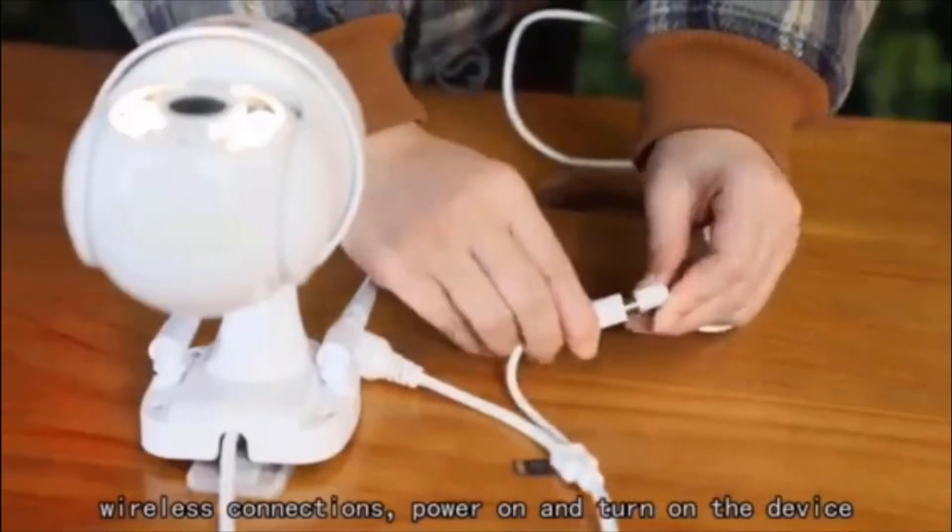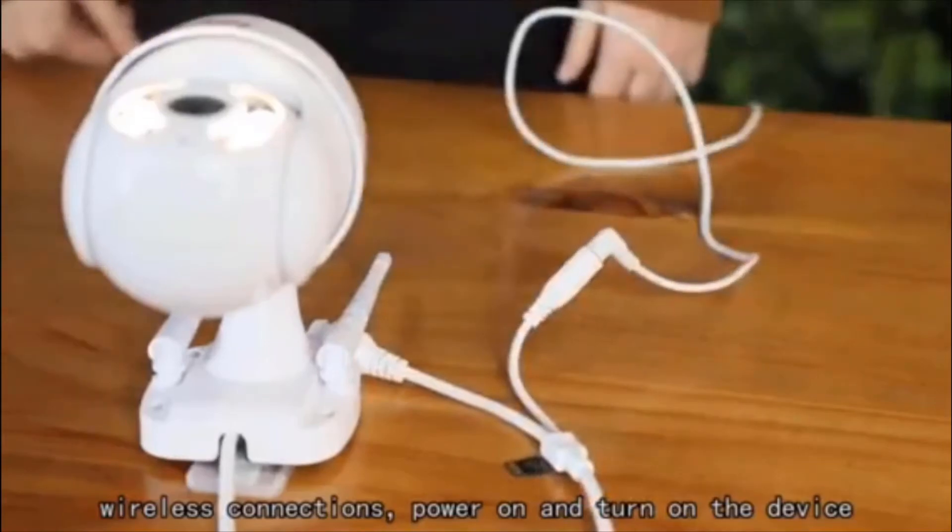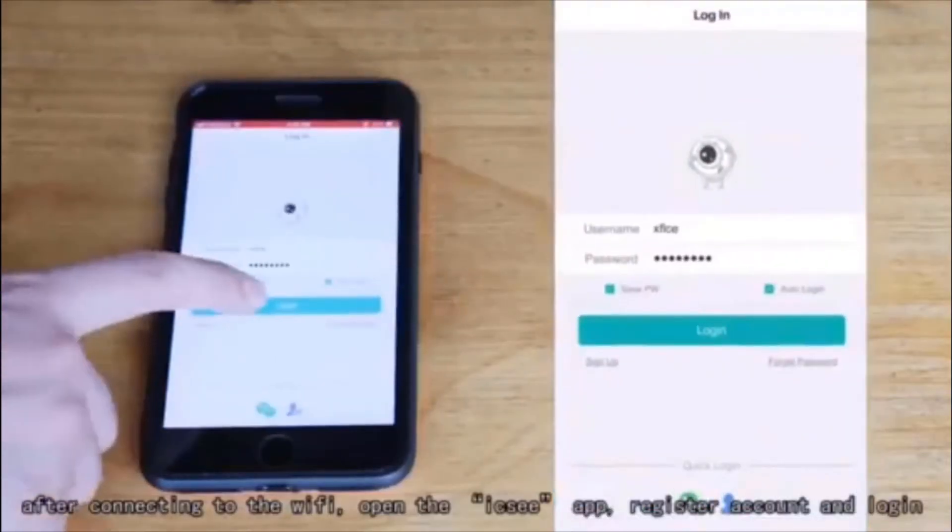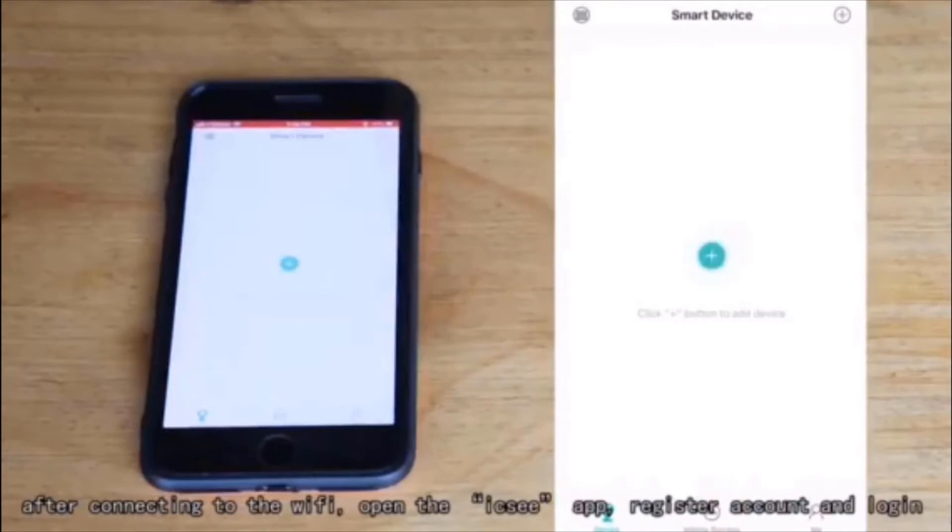Wireless connections: power on and turn on the device. After connecting to the Wi-Fi, open the ICC app, register account and log in.